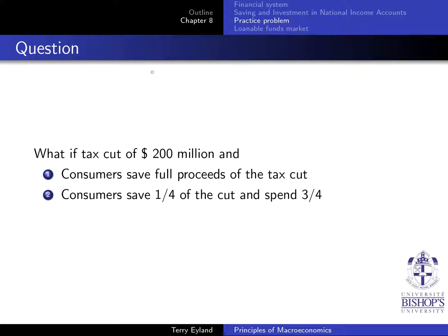What if a tax cut of $200 million happened, and consumers either save the full proceeds of the tax cut, or consumers save a quarter of the tax cut and spend three quarters? Because often when you end up with more money in your bank account, you don't necessarily save it all. So the first scenario is easy but not the most likely.